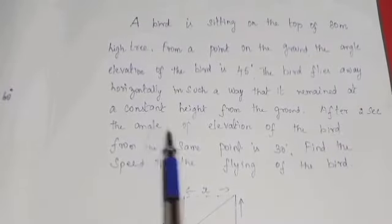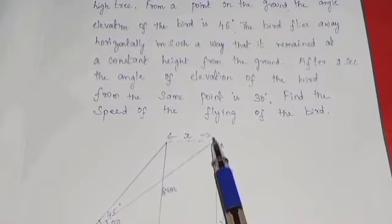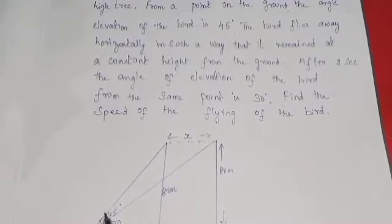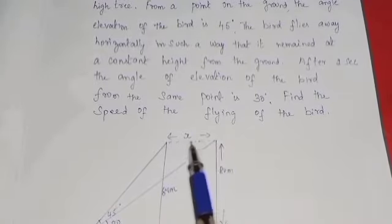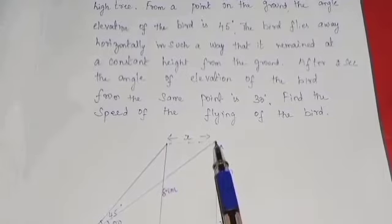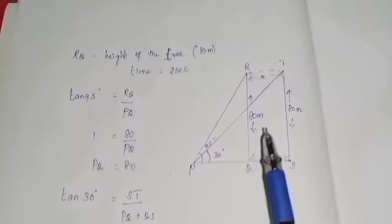This is an 80 meter high tree, and the bird is on top. From the ground at a point, the angle of elevation is 45 degrees. So this is the horizontal line, and this is the bird. The angle is 45 degrees. The height is 80 meters. After 2 seconds of travel, the angle of elevation is 30 degrees at the same height. Now we need to find the speed of the bird.